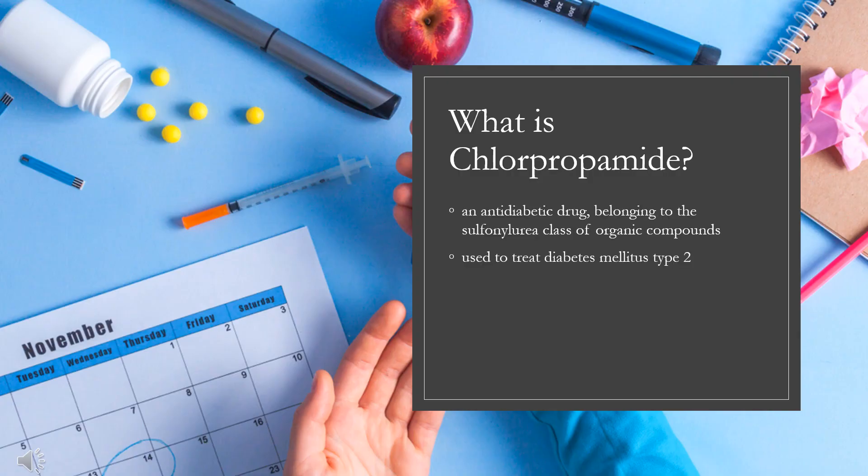What is chlorpropamide? Chlorpropamide is an anti-diabetic drug belonging to the sulfonylurea class of organic compounds. It is used to treat diabetes mellitus type 2. It is a long-acting first-generation sulfonylurea.